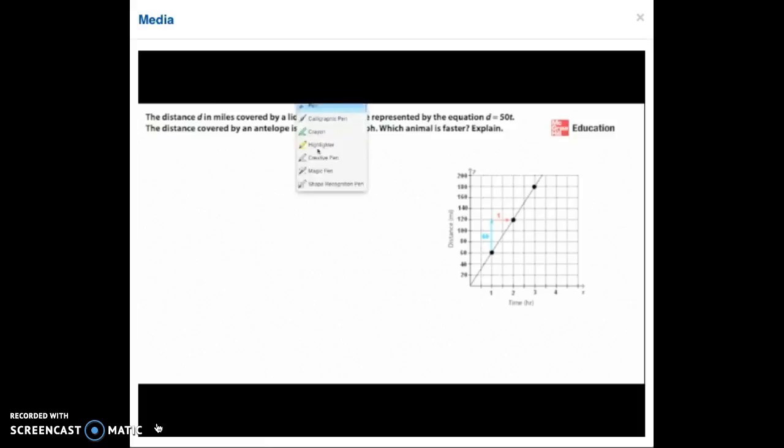Key word in this problem, which animal is faster? That means that we're looking for the rates of both animals and then we'll compare them.